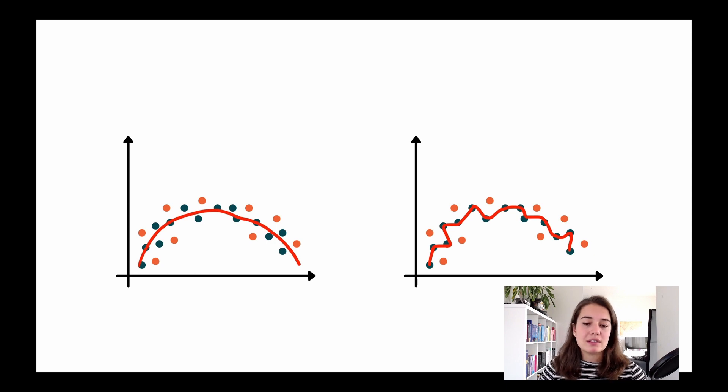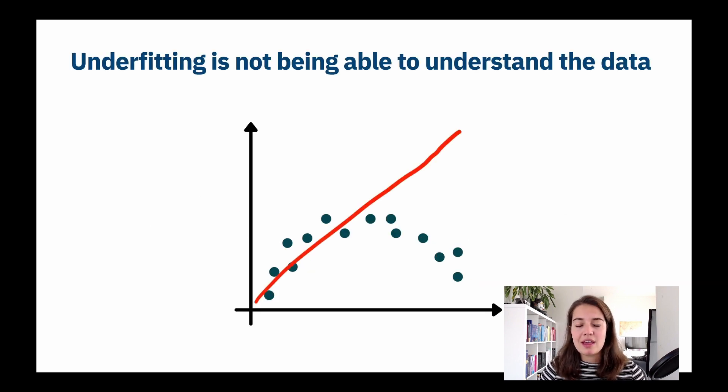There is another side of this coin, of course, which is underfitting. And underfitting is when you are not able to understand the data, when you are not able to fit the data or see any pattern in the data. And this is more or less what it would look like. So a model that is not able to understand what's going on with the data anyway.